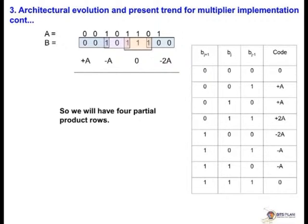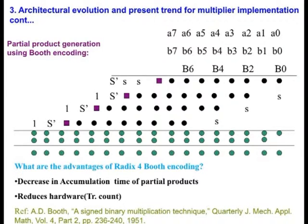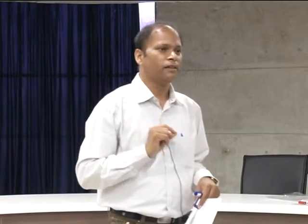Because of use of this grouping, the partial products for 8-bit are now reduced to 4 partial product rows. If we use radix 8, it will be divided by 3. If radix 16, divided by 4. If radix 64 equals 2 to the power 6, the number of partial products will decrease by 6. So this is excellent work which he has given.